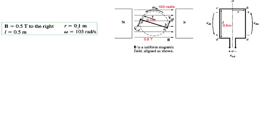So what is given is these. B is the magnetic field, 0.5 tesla to the right. So this is the magnetic field. R is the radius, 0.1 meter. So this is the radius. L is length, 0.5 meter. This is the length of the wire.